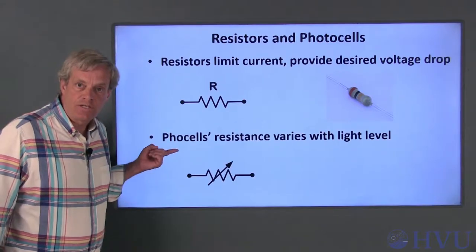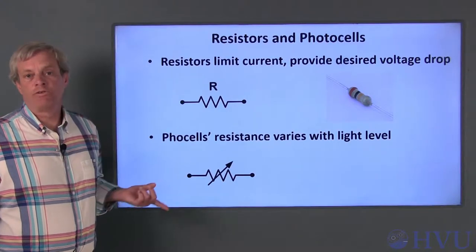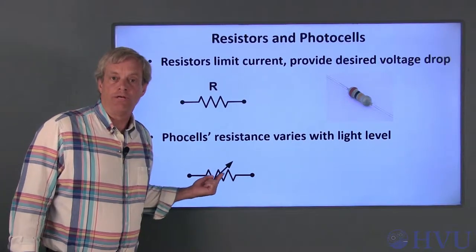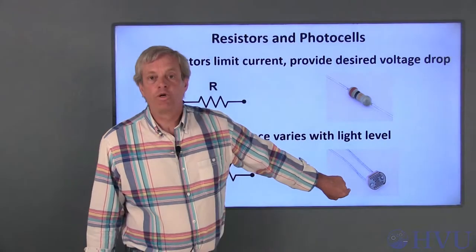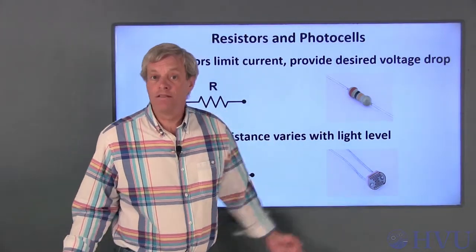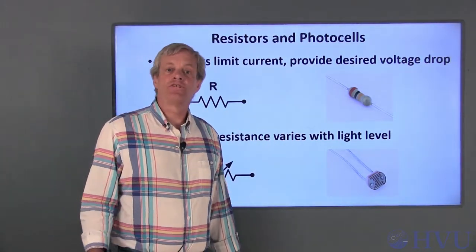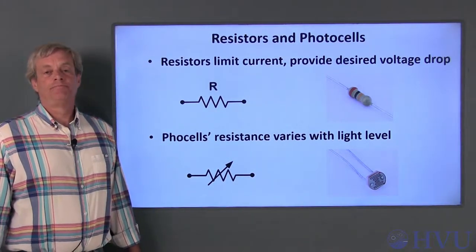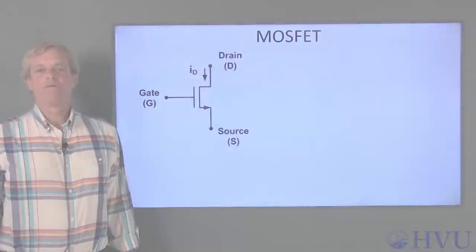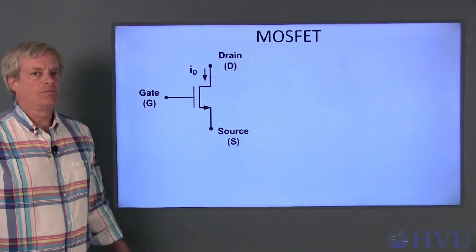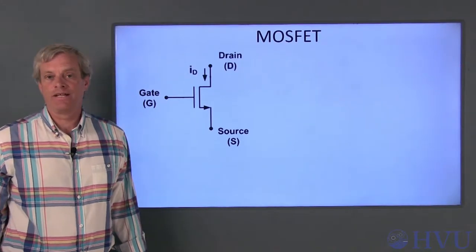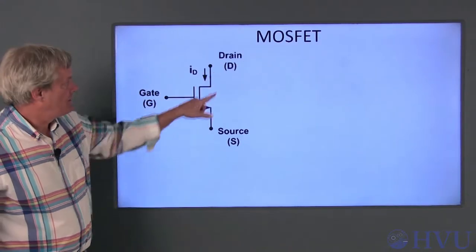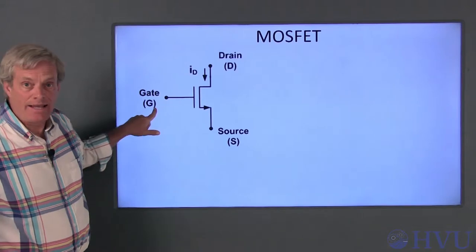Photocells are resistors that vary resistance with light level. The symbol for a variable resistor is a resistor symbol with an arrow through it. This is what a typical photocell looks like. Again, the polarity doesn't matter, which means you can swap the terminals without affecting the behavior of the component. The transistor we'll use is called a Metal Oxide Semiconductor Field Effect Transistor, or MOSFET. The device has three terminals: a drain, a source, and a gate.